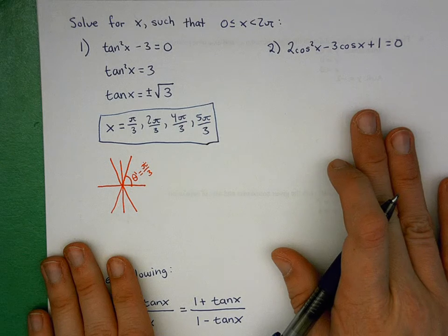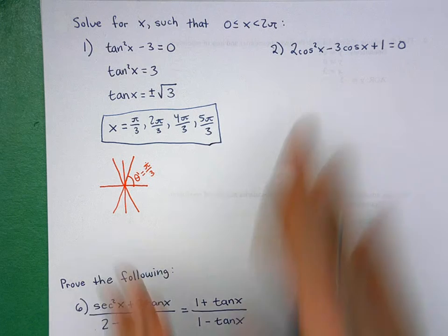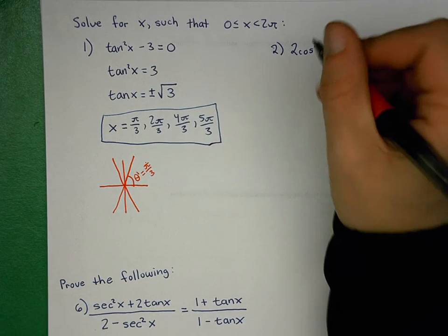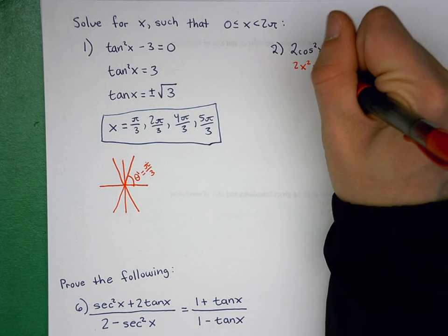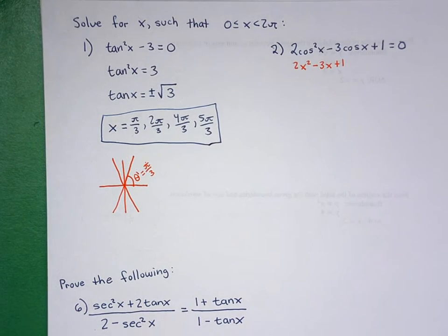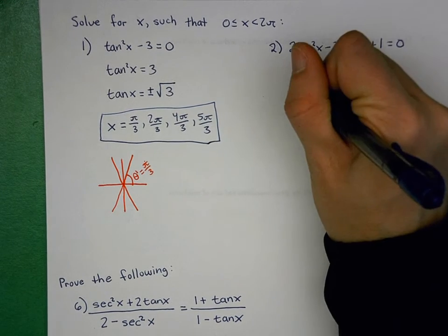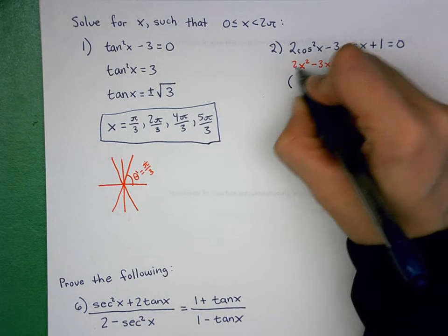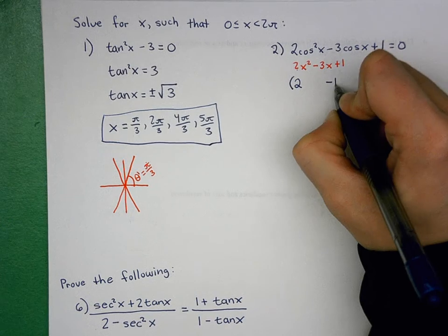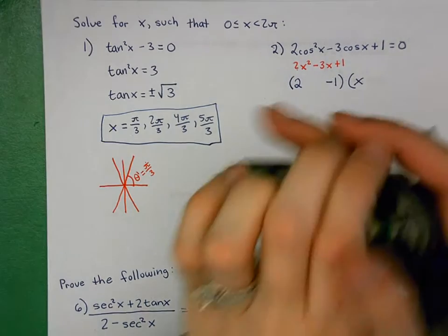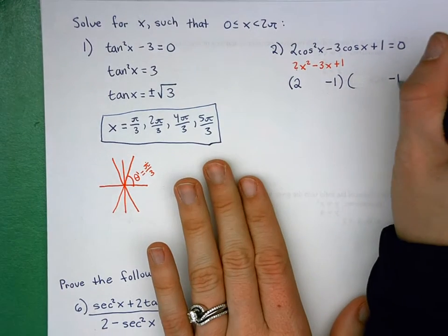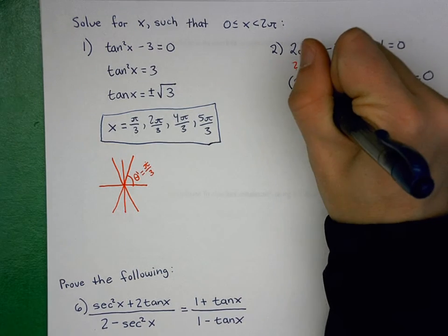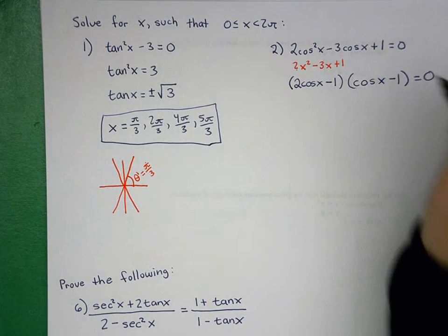Number 2 requires factoring since we have a squared term and a non-squared term. We factor it like 2x² - 3x + 1, just using cosine x instead of x. A common mistake here: this correctly factors to (2x - 1)(x - 1), so in our case it's (2cos x - 1)(cos x - 1) — with minus signs, not plus signs.